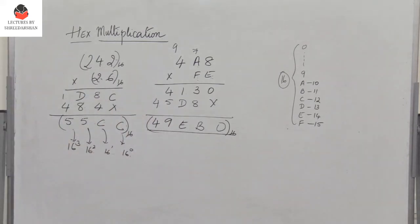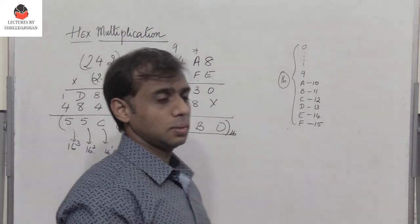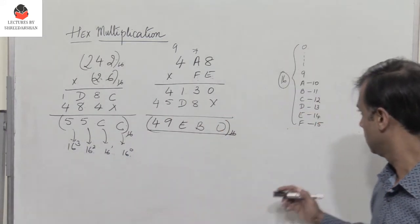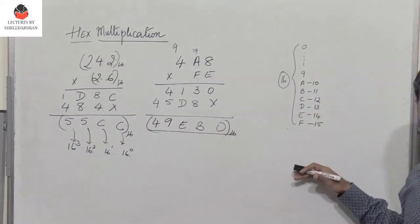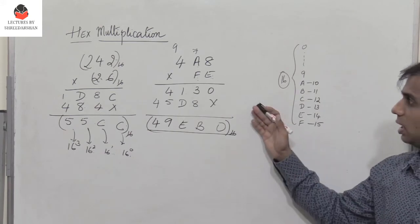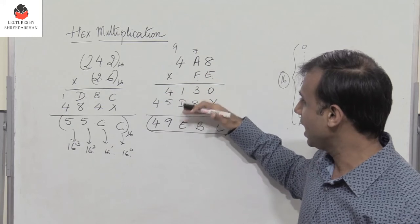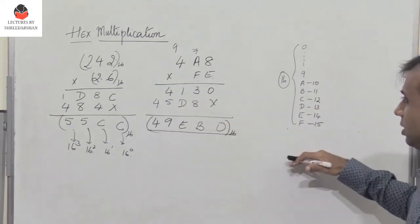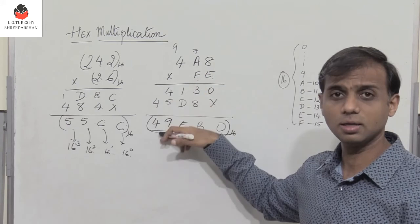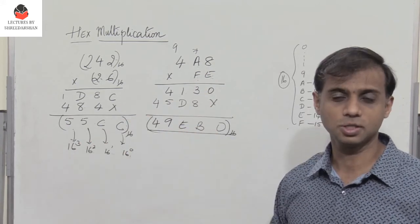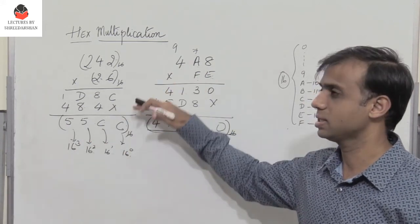So you have to remember that if you multiply the two numbers and if it exceeds beyond 15, if the number is greater than 15, convert it to hex format and continue the process of multiplication. And then when you add, if the number becomes greater than 15 again, convert it to hex, take the carry and continue with the process of addition. So this is how we perform hex multiplication.